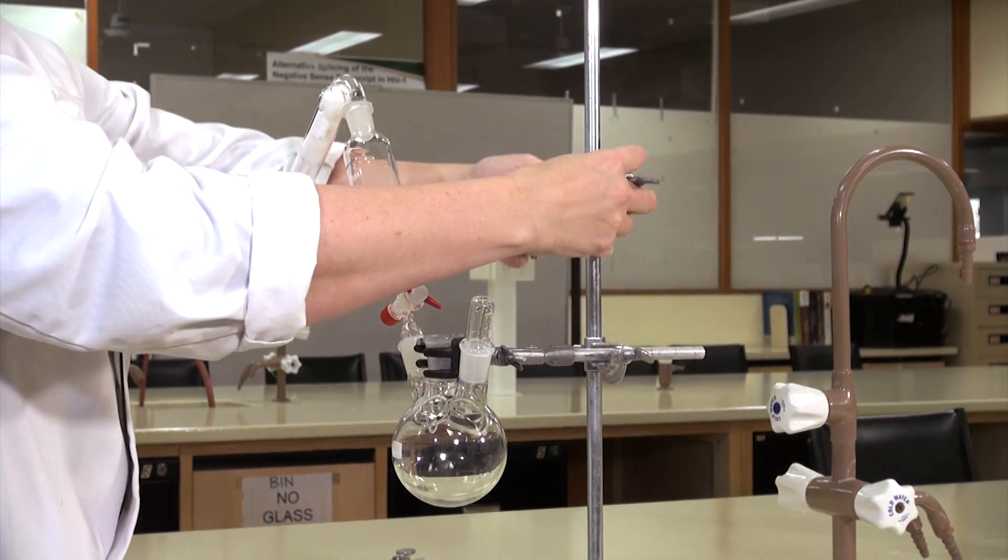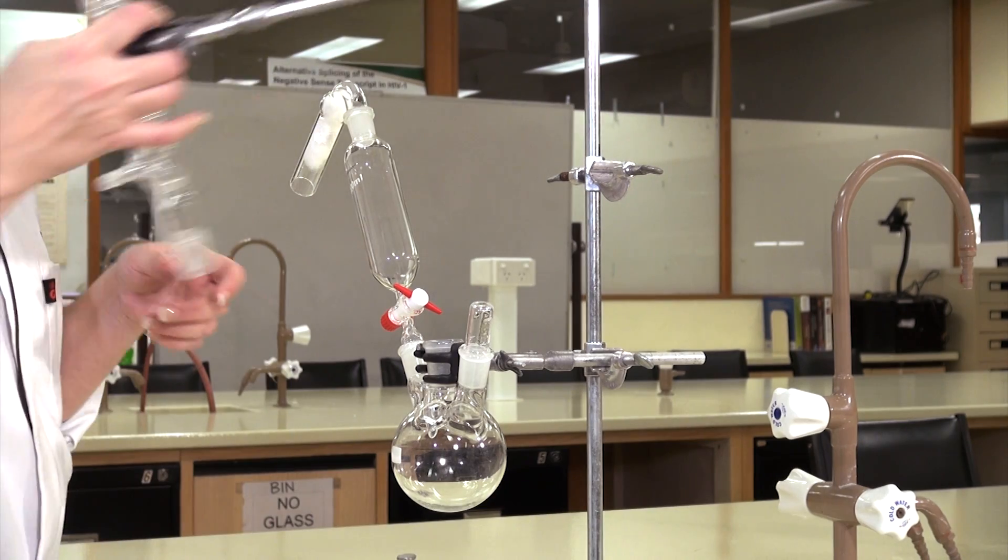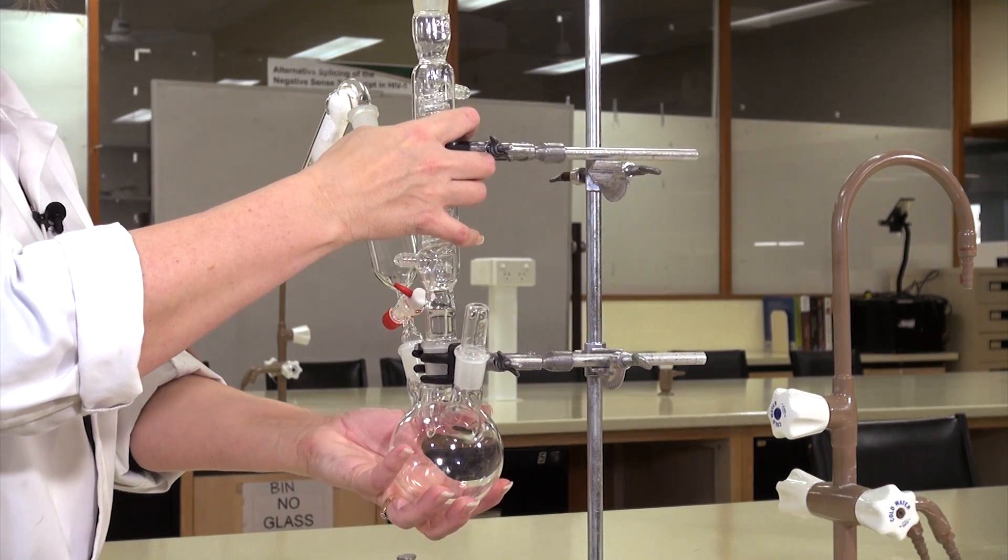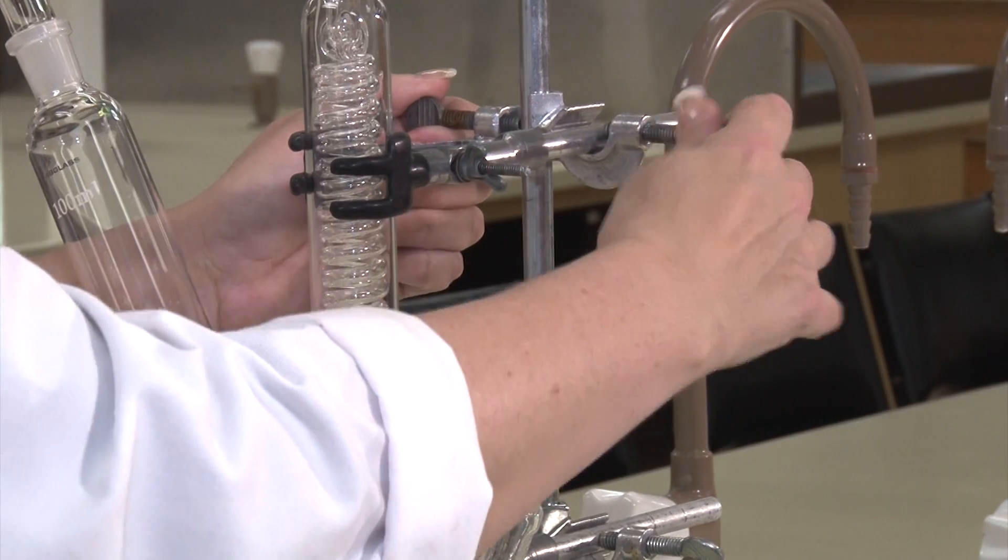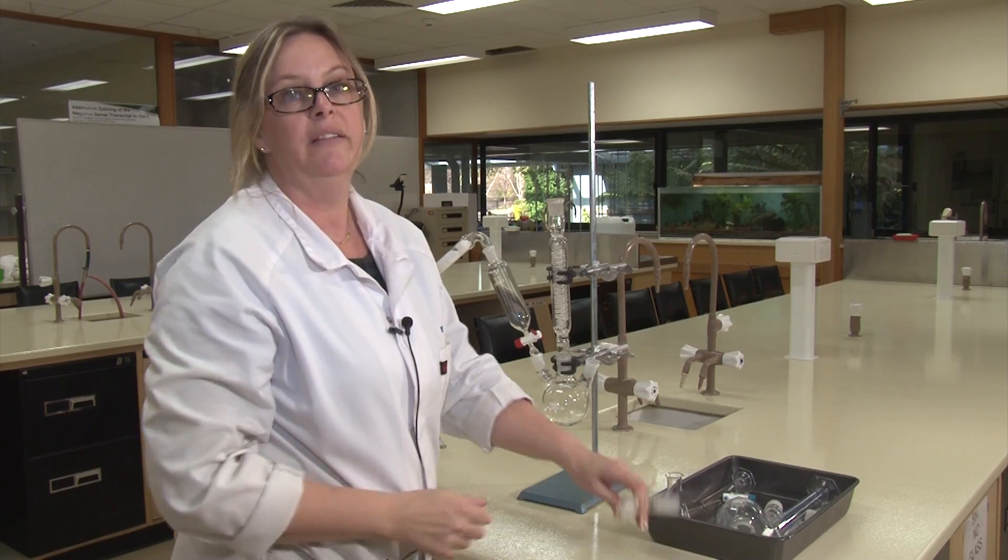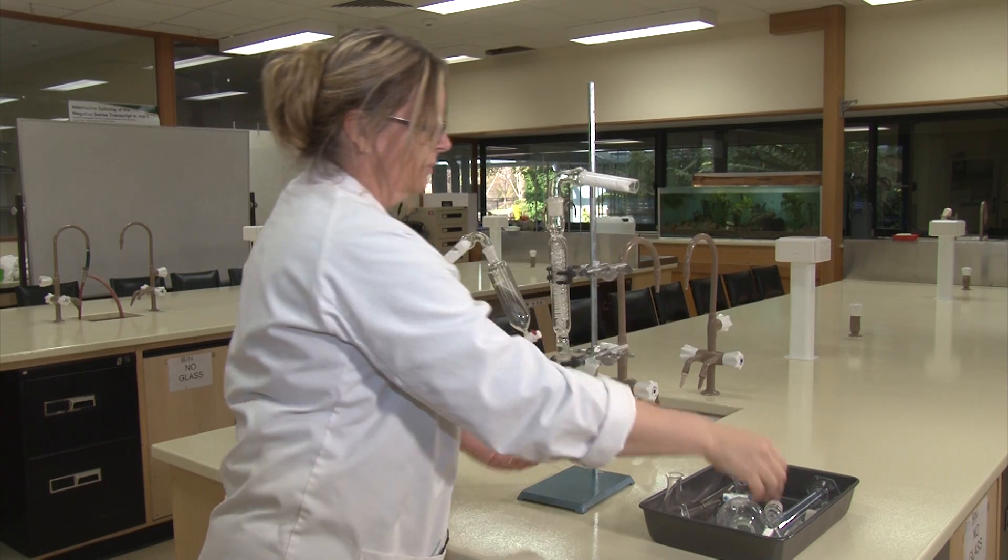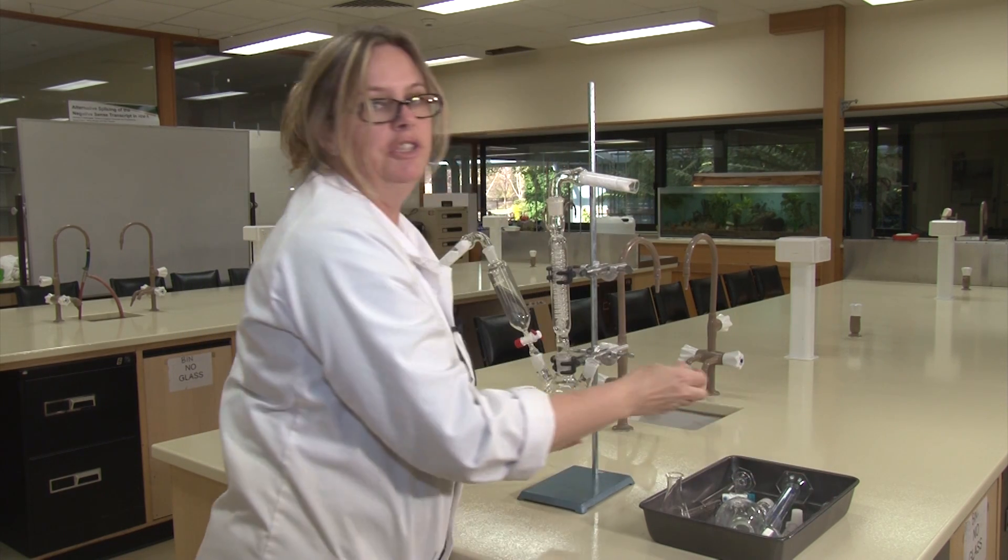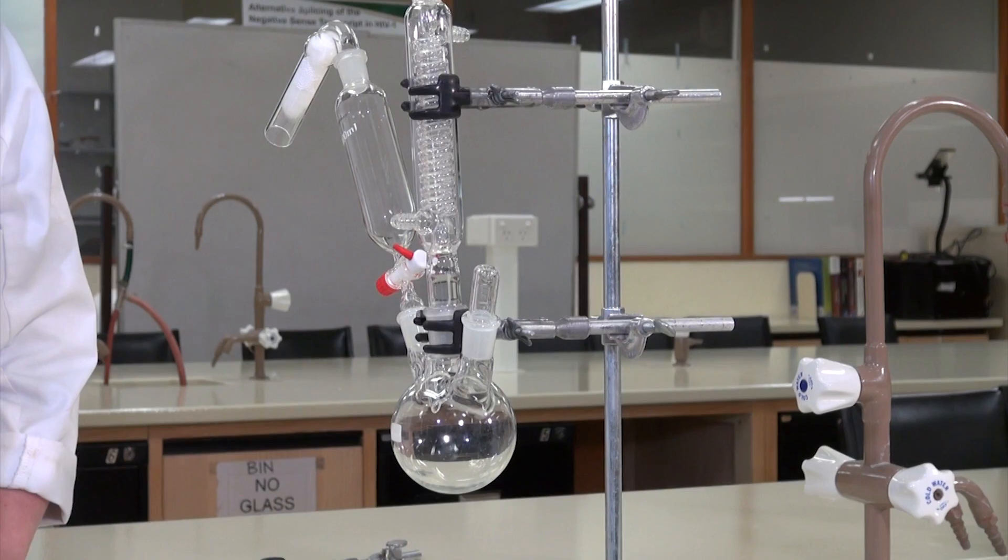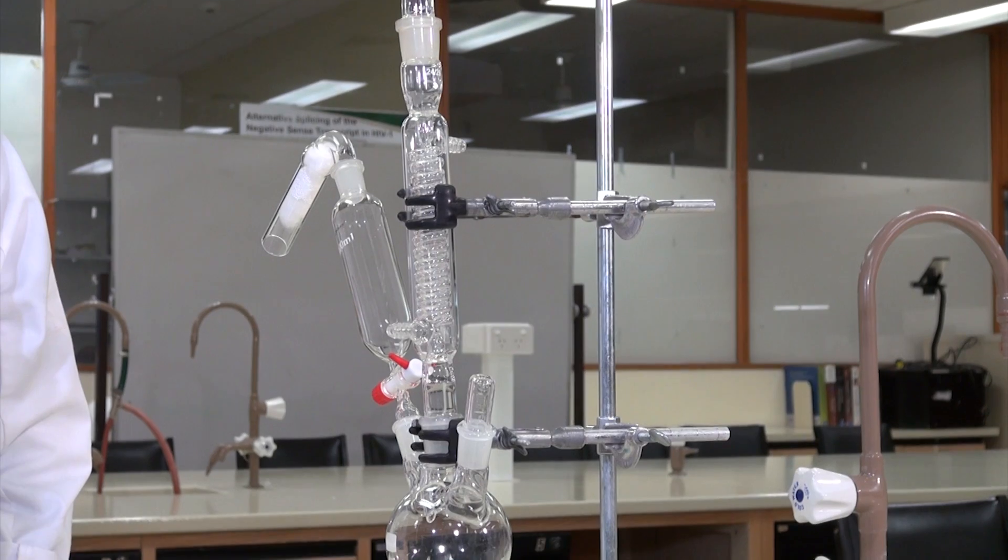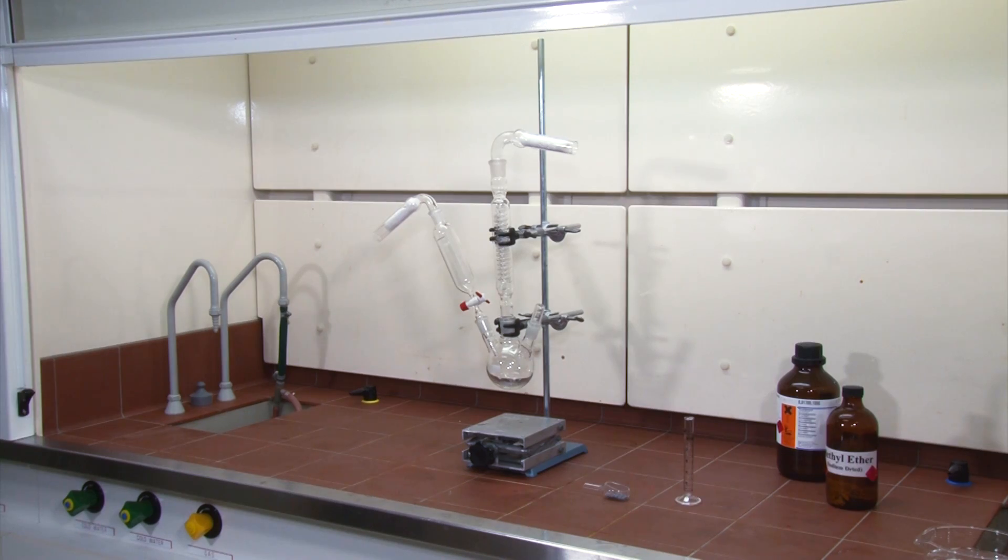You might like to use another clamp on the condenser because it's really long and it needs a little bit of stability. Put the other drying tube in the top of the condenser, and we'll just use a cap to close off the other flask lid. So this is what the final apparatus should look like. Of course we're going to set it up in the fume hood because we're using ether in this analysis.